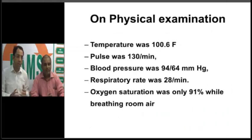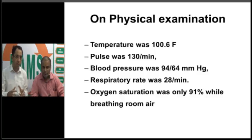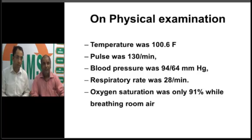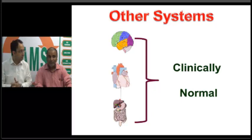Current physical examination shows temperature of 100.6°F, pulse 130, blood pressure 94/64, respiratory rate 28, and oxygen saturation of only 91% on room air. To summarize so far: he is a PLHIV patient on ART but not taking it properly — that is the main clue. He has dry cough with scanty sputum, low oxygen saturation, and fever. We are dealing with a respiratory infection in an immunocompromised patient. All other systems are normal.